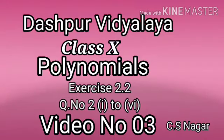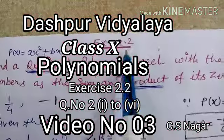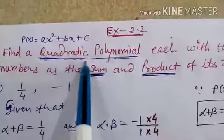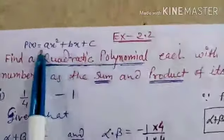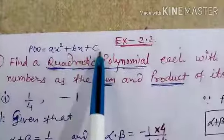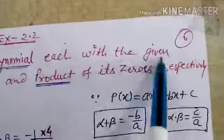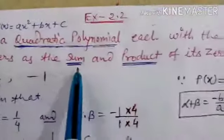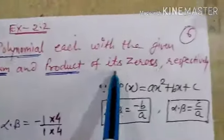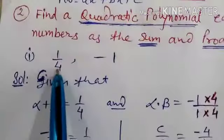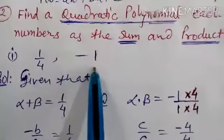Hello everyone, this is video number 3 on chapter 2, that is polynomials, and in this video we will finish exercise 2.2. The second question is: find a quadratic polynomial — quadratic polynomial means x squared plus bx plus c. We have to find a quadratic polynomial each with the given numbers as the sum and product of its zeros respectively. The first number is the sum of zeros and the second number is the product of zeros.